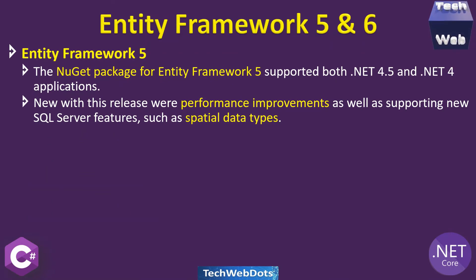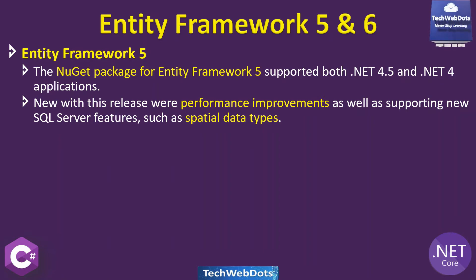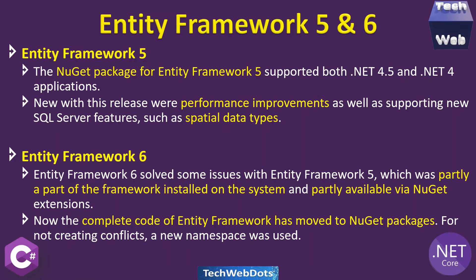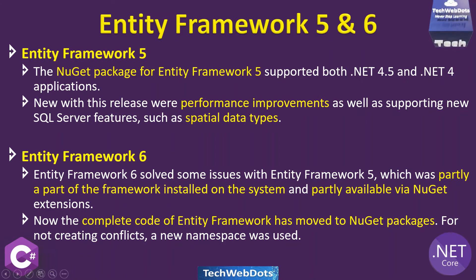Entity Framework 5 introduced NuGet packages supporting both .NET 4.5 and .NET 4 applications, along with performance improvements and support for new SQL Server features such as spatial data types. Entity Framework 6 solved issues where EF5 was partly part of the installed framework and partly available via NuGet. In EF6, the complete code was moved to NuGet packages, resolving partial installation conflicts. A new namespace was introduced in EF6 to avoid naming conflicts, and it delivered better performance overall.